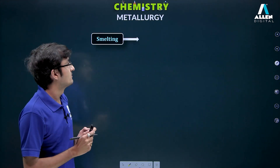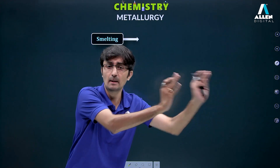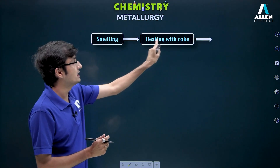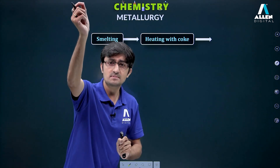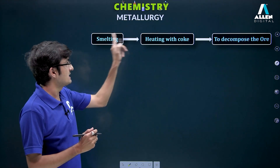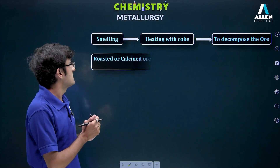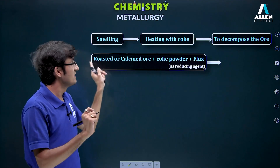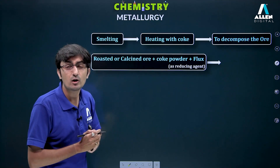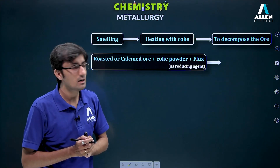As promised in the overview, let's now study smelting in detail with its mechanism. Smelting basically converts metal oxide into metal. The process involves heating with coke. Coke is obtained by heating coal at very high temperature for a long time. The objective is to decompose the metal oxide. Into the roasted or calcined ore, we add coke powder, which acts as a reducing agent to reduce metal oxide to metal.